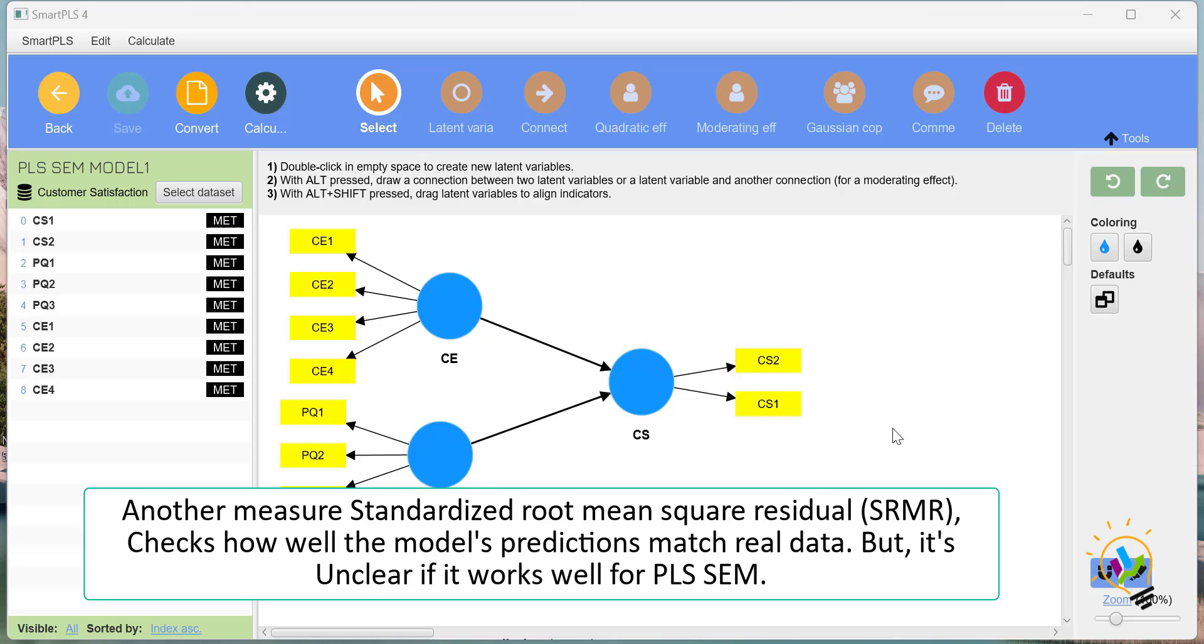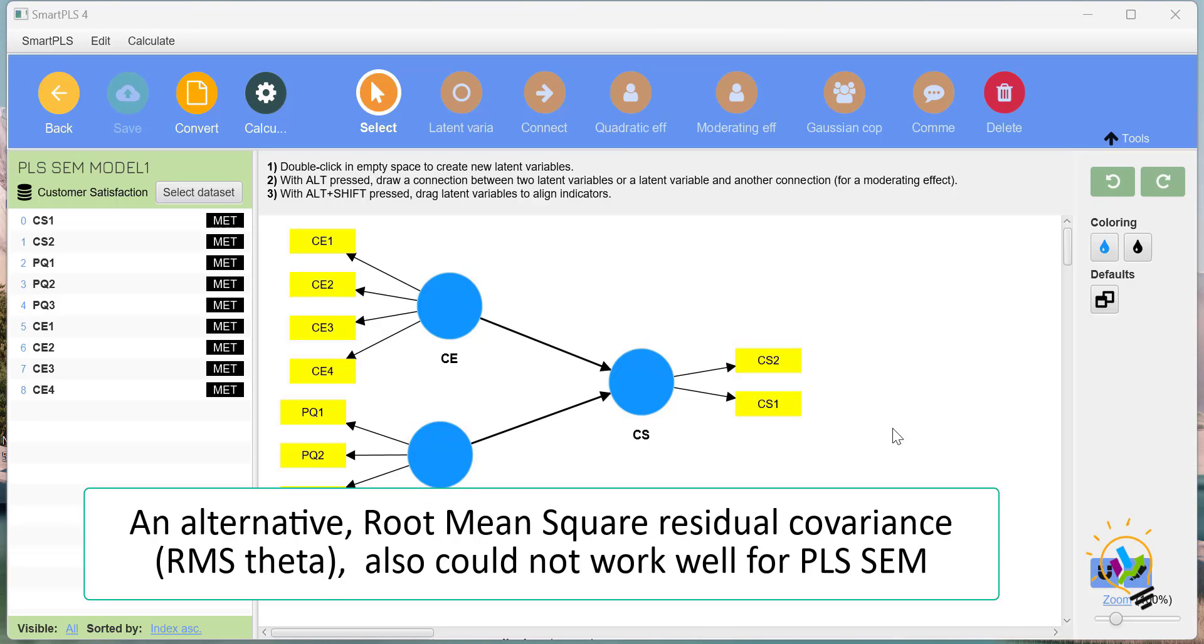An alternate is Root Mean Square Residual Covariance (RMS theta), which follows the same logic as SRMR but relies on covariance. This also could not work well for PLS-SEM.